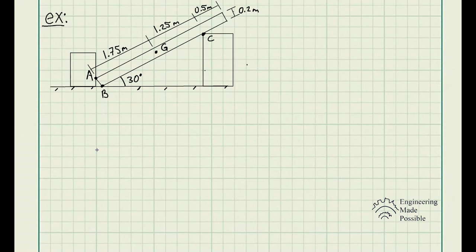The problem statement for this example is: draw the free body diagram of the uniform bar, which has a mass of 100 kilograms and a center of mass at point G. The supports A, B, and C are smooth.